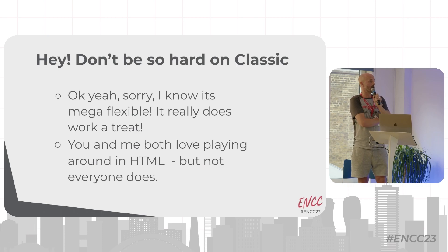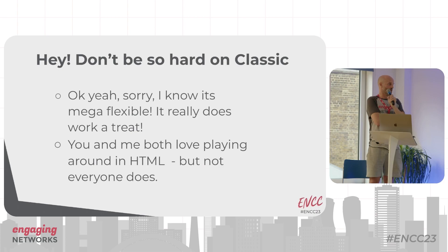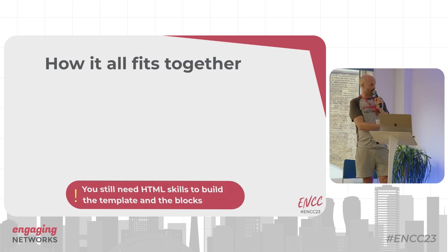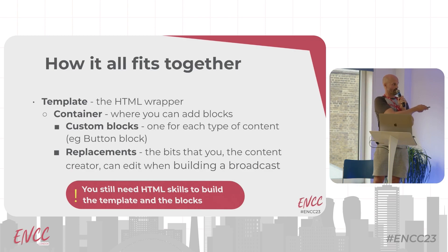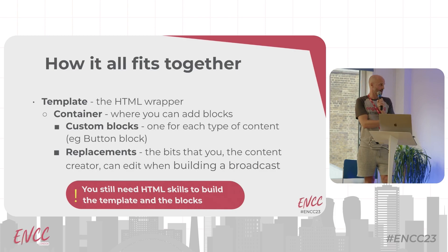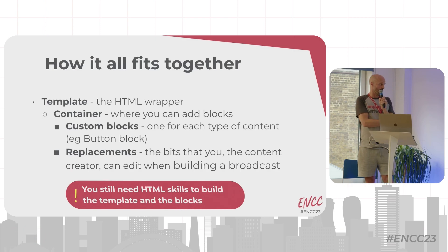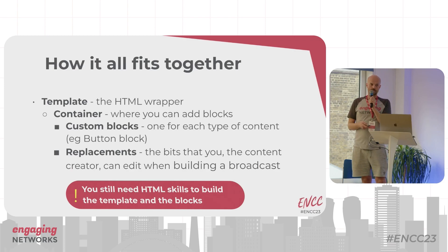I don't want to sound hard on email classic — I really enjoyed using it and I'm not scared of HTML. But here's how it all fits together: you've got the template, which is the HTML wrapper. Inside that template you've got what we call a container, and the container is where you can add your custom blocks. Then you've got the custom blocks — one for each type of content you want in your broadcast. Within the custom blocks you've got replacements, and those are the bits the content creator can edit: text, images, links and so on.